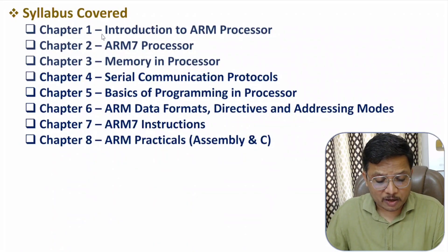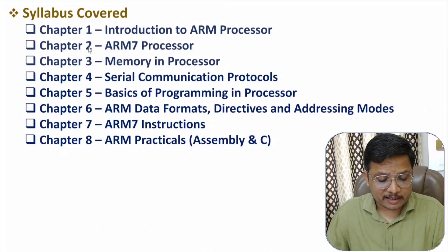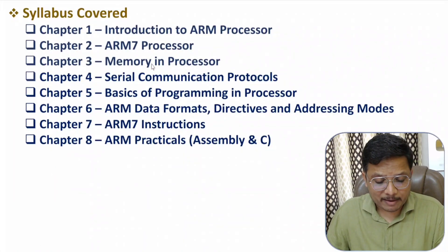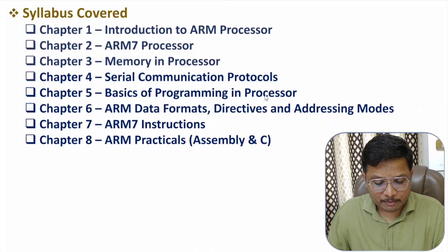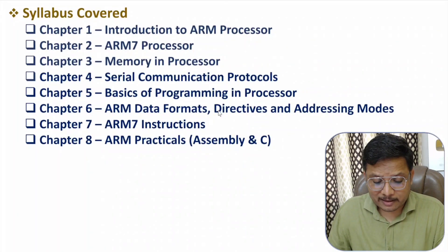The first chapter is an introduction to ARM processor. The second chapter covers the ARM 7 processor. The third chapter is based on memory in processor. The fourth chapter covers serial communication protocols. The fifth chapter covers basics of programming in processor. The sixth chapter covers ARM data formats, directives, and addressing modes.